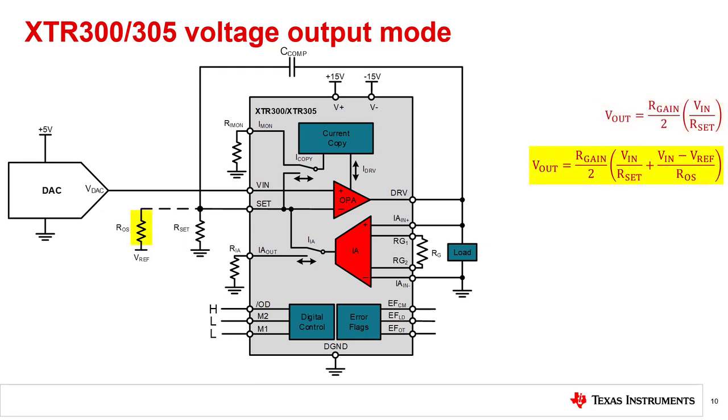The output of the IA is a current that is proportional to the input voltage. The gain of this mode is set by the gain resistor of the IA, and the RSET resistor as seen in the transfer function shown here. Similar to the current output mode, the addition of the R-offset resistor allows for a bidirectional output with a single-ended input. A one-tenth copy of the output current of the OPA can be monitored at the I MON pin. During an output short circuit or overcurrent condition, the XTR300 and 305 output current is limited and the load error flag is activated.